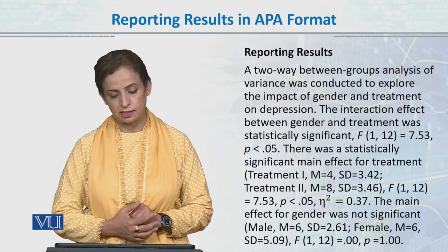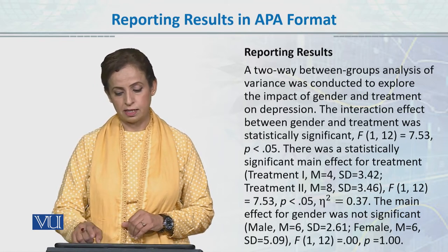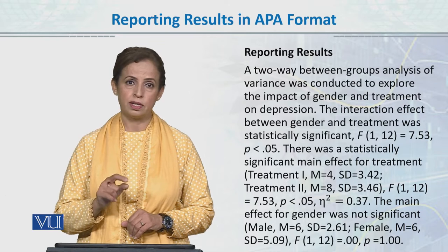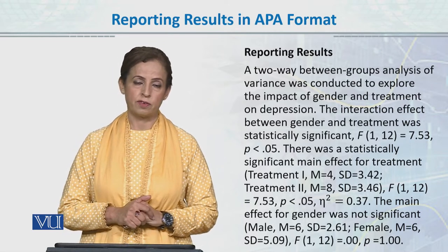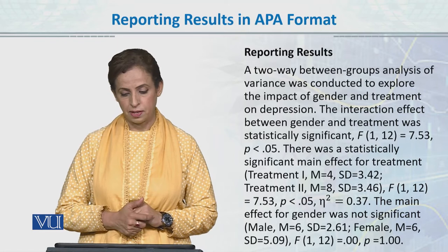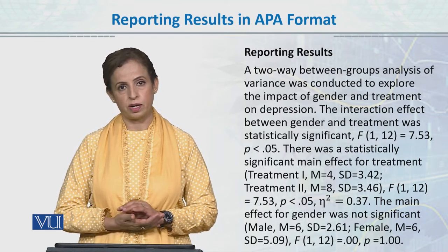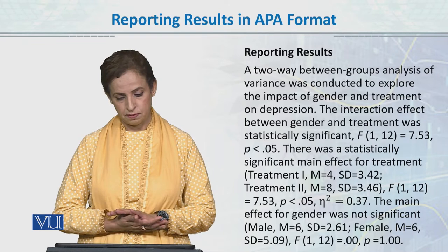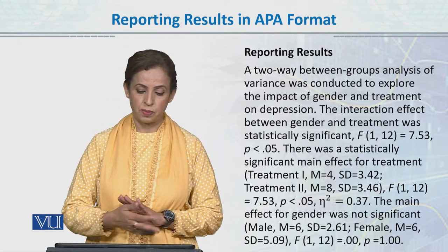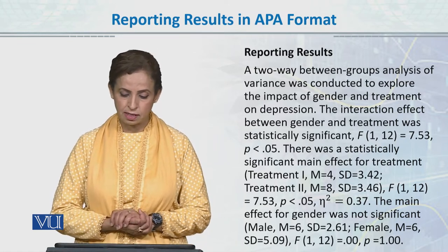Our F is italicized. F is our degrees of freedom: 1 refers to the between-group degrees of freedom and 12 refers to the within-group degrees of freedom, so F(1, 12) = 7.53. Then we give the P value — if P is less than 0.05, this means that our results were significant.